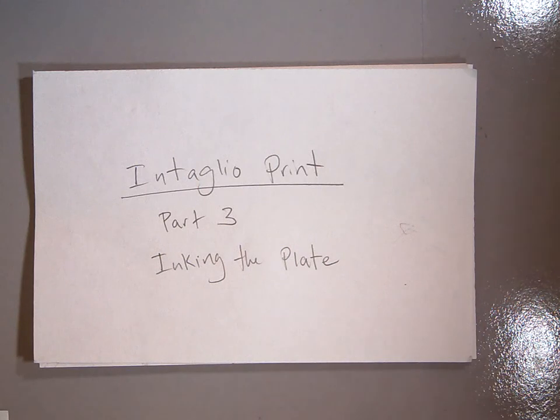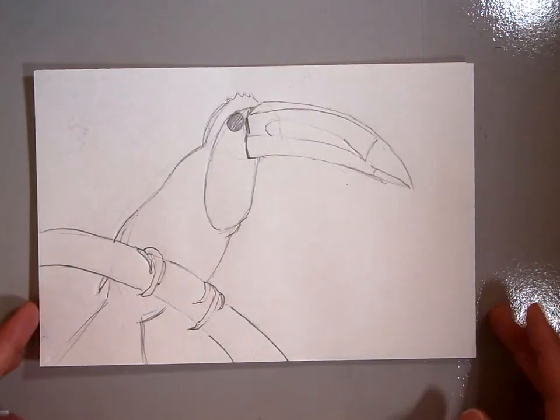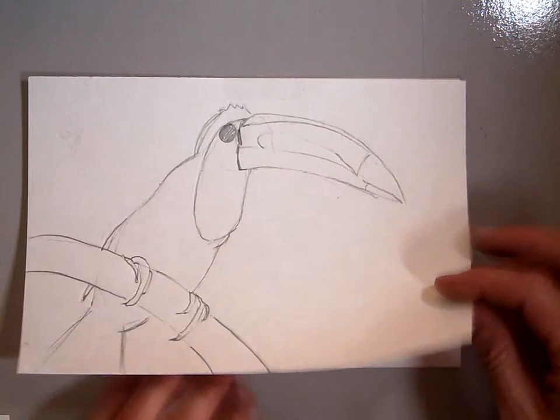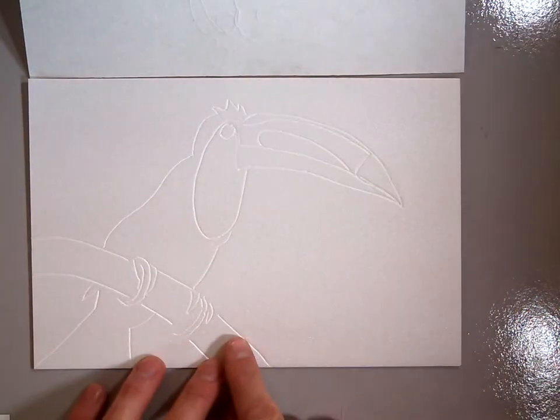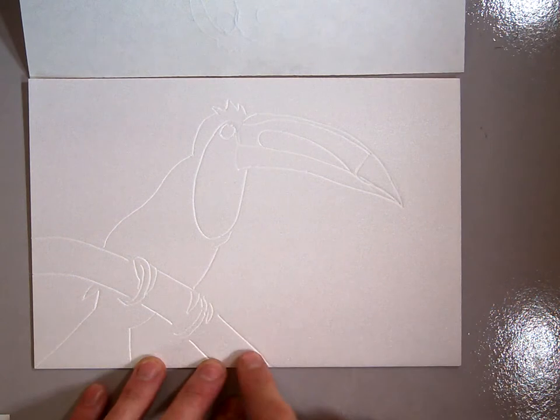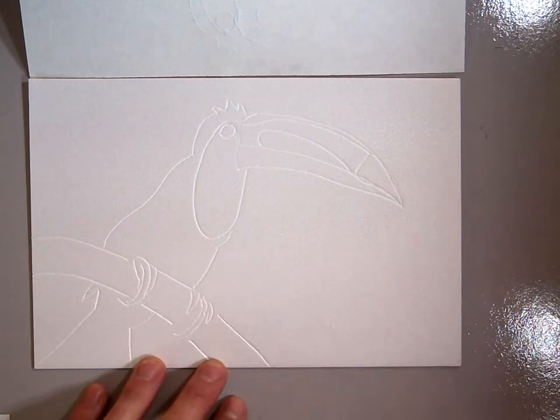Today we are going to start our Intaglio print part three. This is going to be inking our Intaglio plate. In the last two sessions, we traced our image, which is a bird for this project, and then we retraced it on our styrofoam plate so that we have nice indentations and a nice picture.